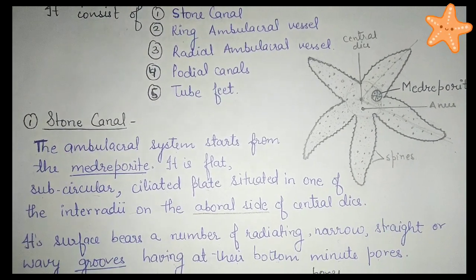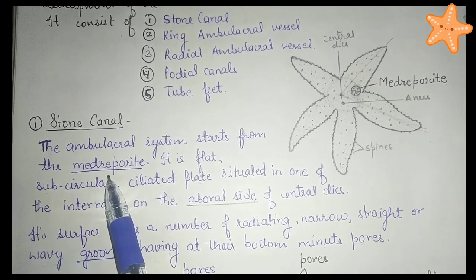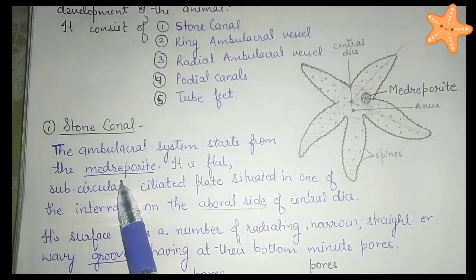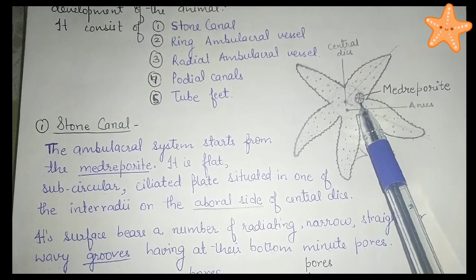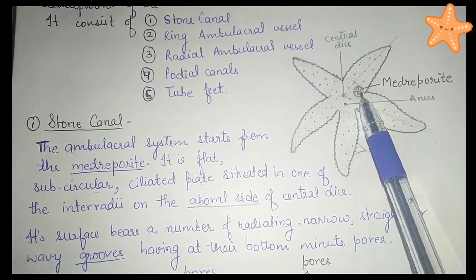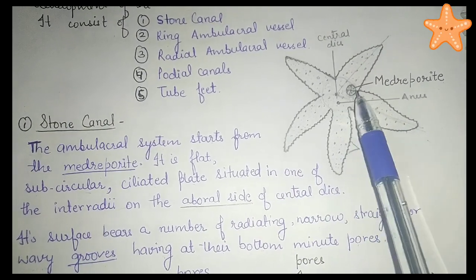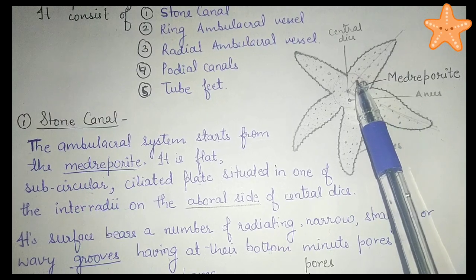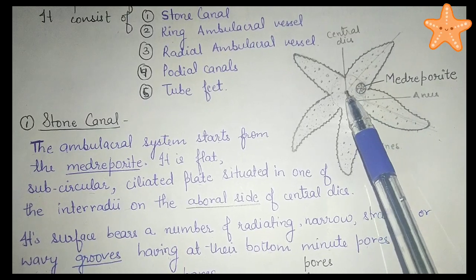Let's start first with the stone canal. The ambulacral system starts from the madreporite. The madreporite is a flat, sub-circular, ciliated plate situated on the aboral side — the aboral side being the region near the anus. It is located in the interradius, meaning the space from the central disk between one arm to the other.